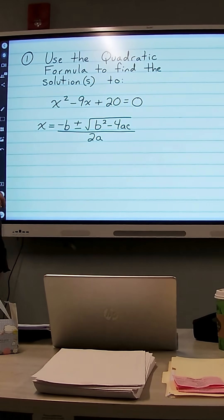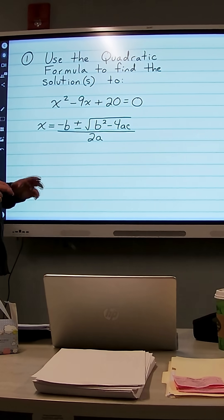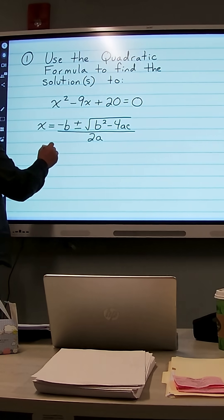Now you may be saying there is no number in front of x squared. Well, there is. It's a 1. It's understood to be 1 when we don't write the number. So first thing, we'll identify a, b, and c.